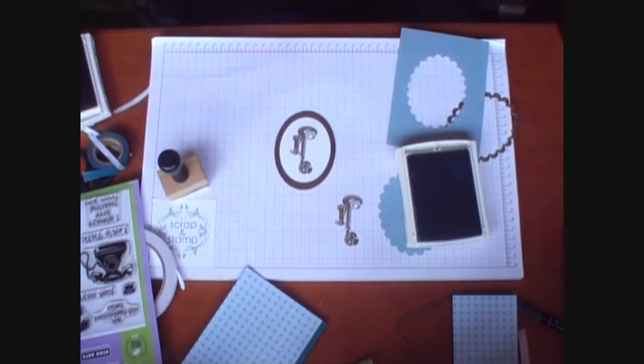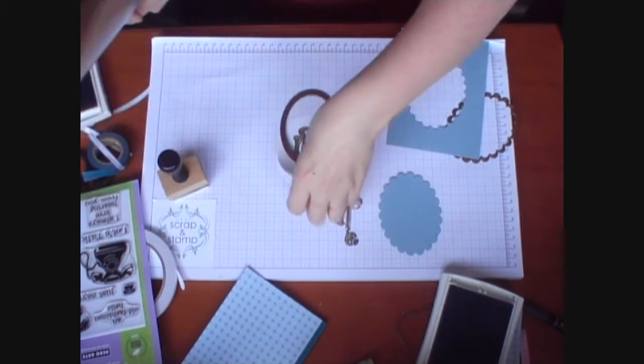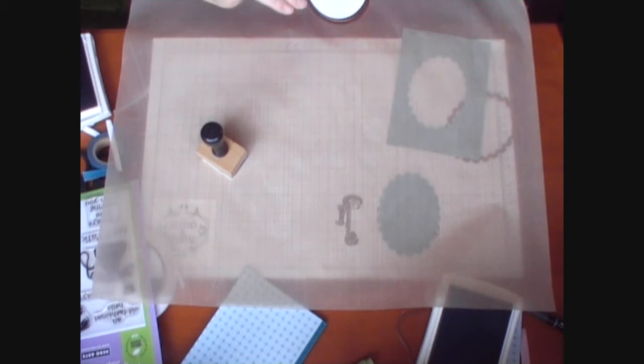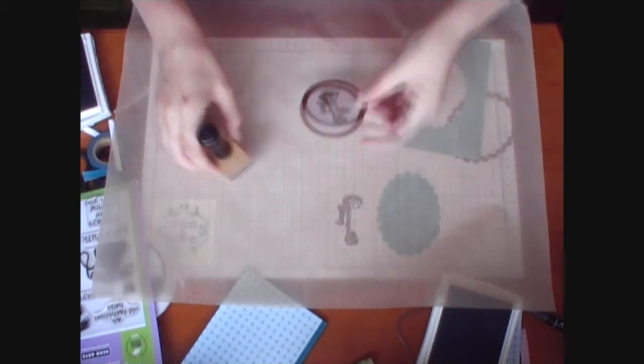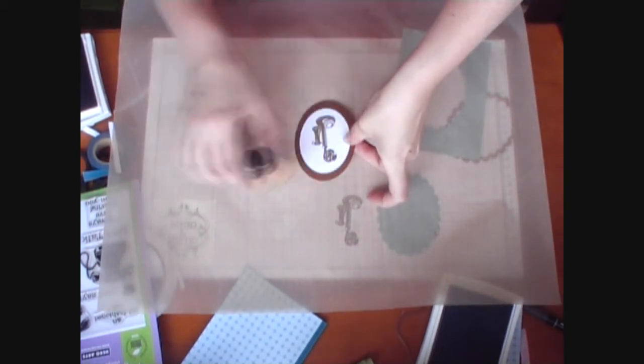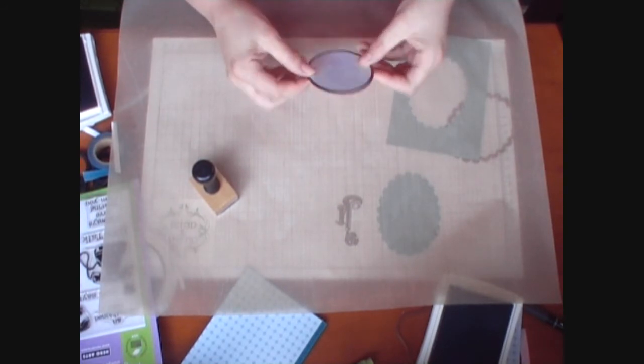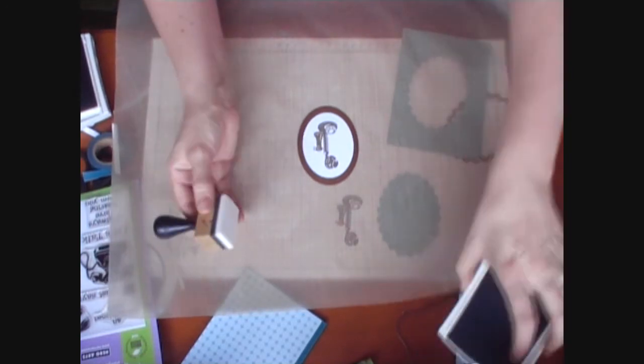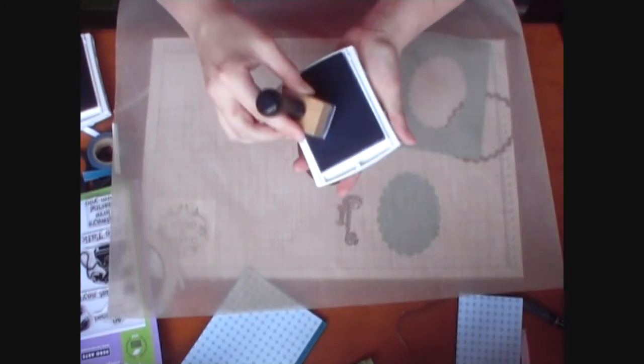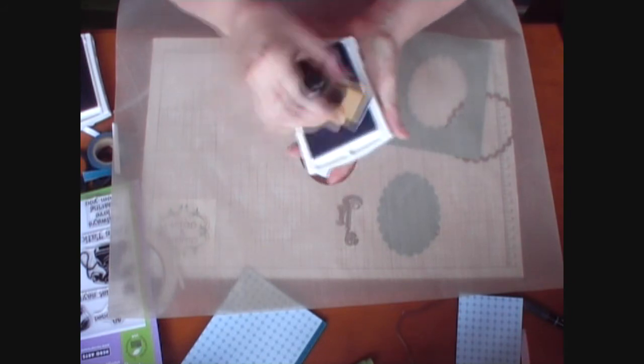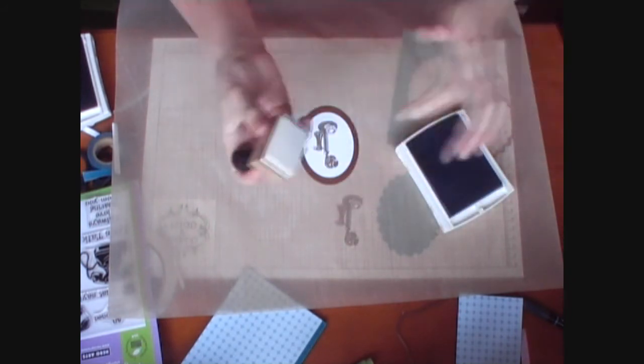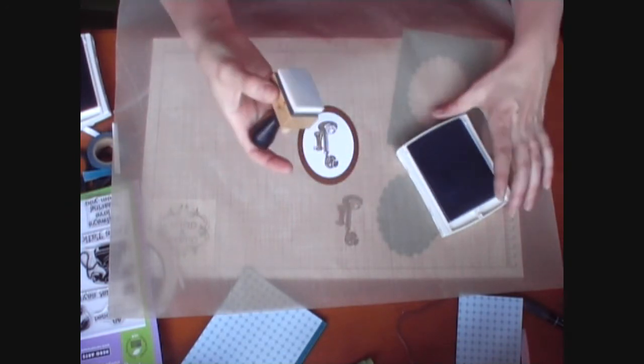And I'm just going to grab my craft sheet. The craft sheet makes it very easy to use the blending tool because it allows the tool to move from the sheet onto the project without getting caught on the paper. Now when I ink up my blending tool I don't dab it in the ink. I like to use a swirling motion on there. That way you don't get any lines from the ink pad on the stamp which then goes onto your project.